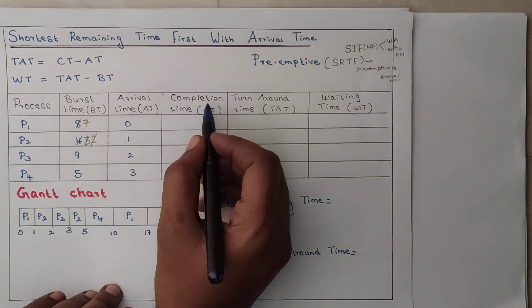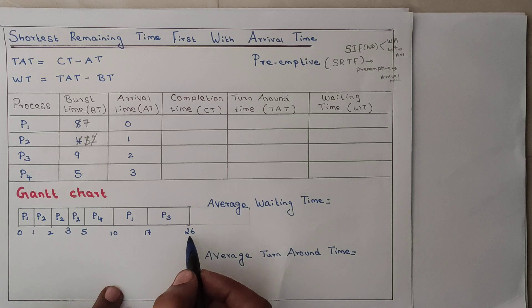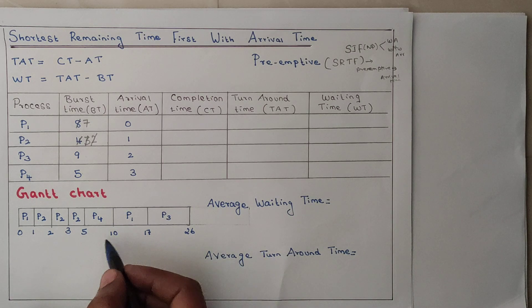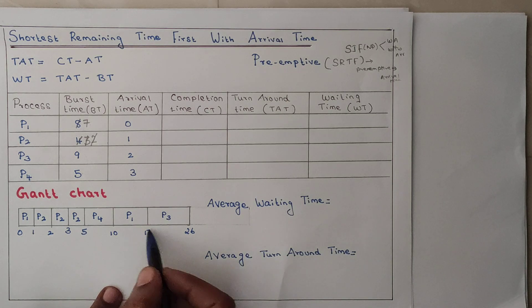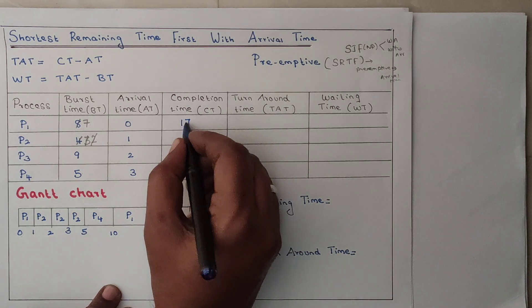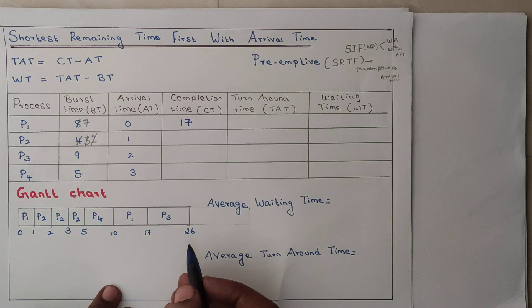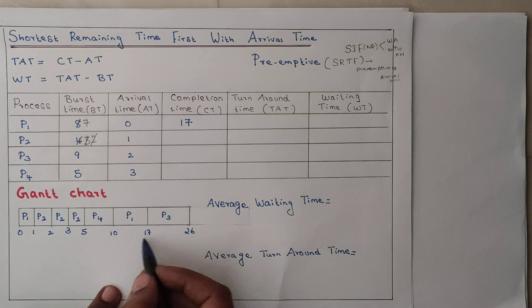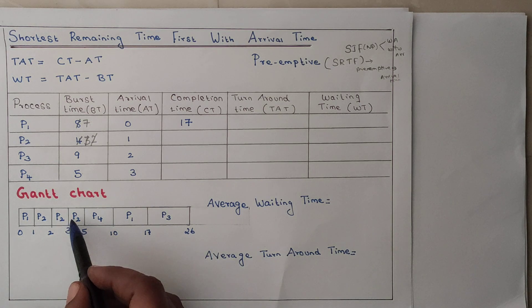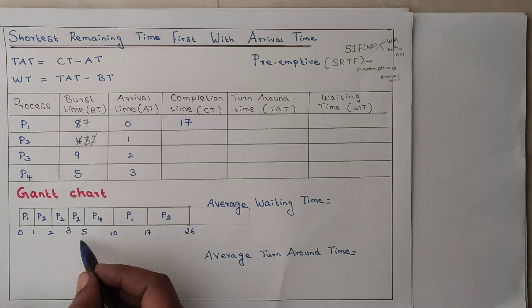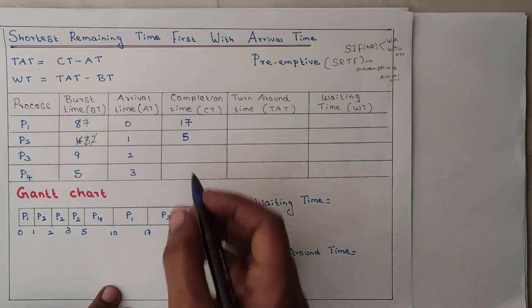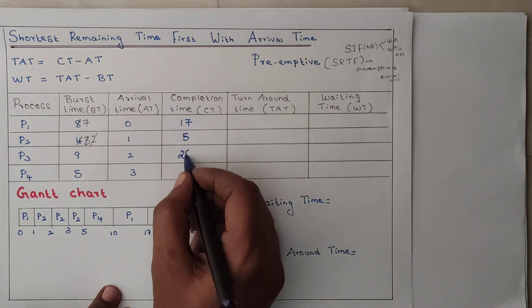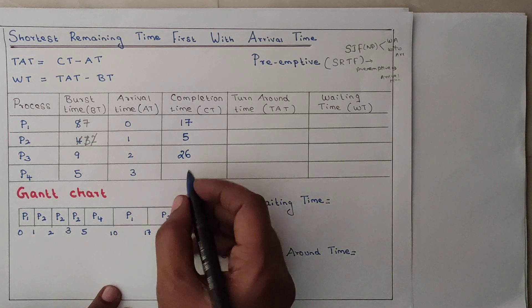Now we will calculate the completion time. We move from the right end of the Gantt chart. Completion time of P1 is 17. Completion time of P2 — P2 has different slots, but we take the rightmost end — P2 is 5. Completion time of P3 is 26. Completion time of P4 is 10.